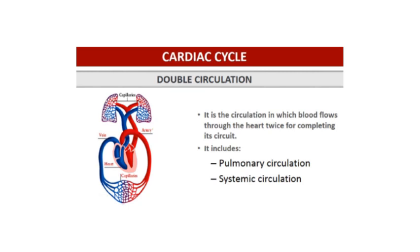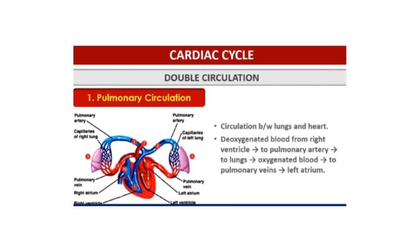As we studied in the last video, mammals show double circulation, meaning the blood flows through the heart twice. This includes pulmonary and systemic circulation. Pulmonary circulation is the circulation between the lungs and the heart — 'pulmonary' being the scientific name for the lungs. Here, deoxygenated blood from the right ventricle goes to the pulmonary artery, then to the lungs where it gets oxygenated, then to the pulmonary veins, and from there to the left atrium.